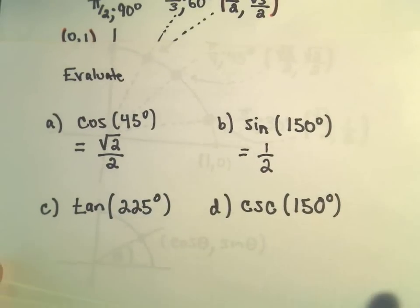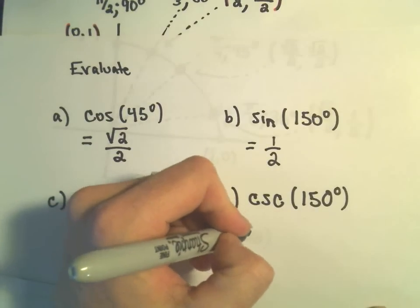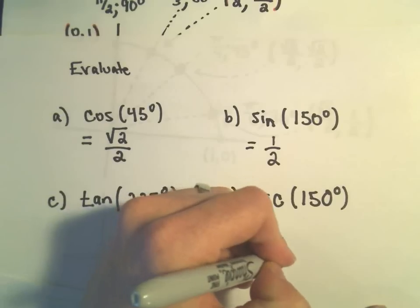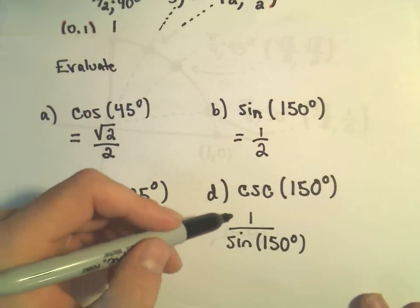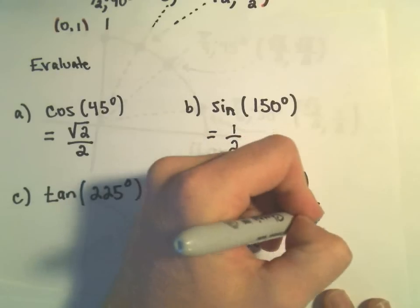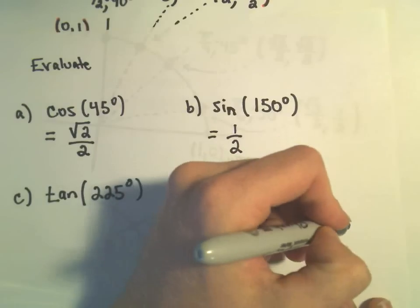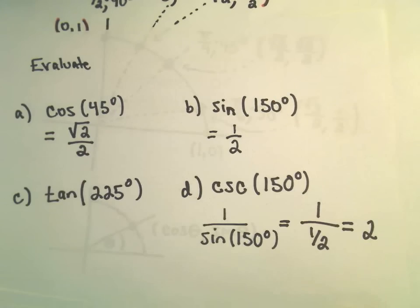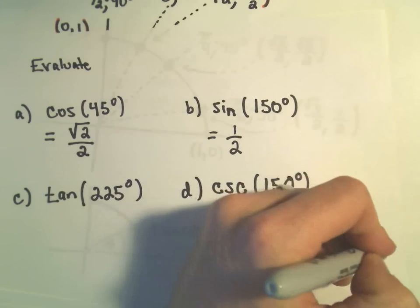Let's see, cosecant of 150 degrees, let's skip to part D here real quick. Remember, cosecant is defined to be one-over-sine. So cosecant of 150 degrees is equivalent to one-over-sine of 150 degrees, which would just be one-over-a-half. And one-divided-by-a-half, that'll just flip your bottom fraction, that'll give you two-over-one, or two. So now we've got our value for cosecant of 150 degrees.